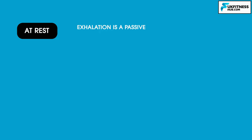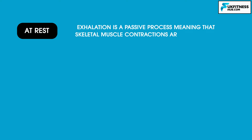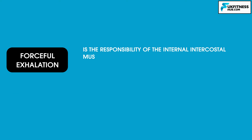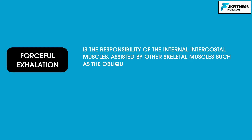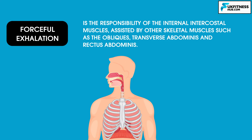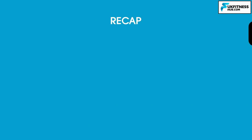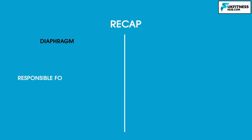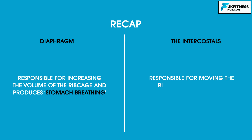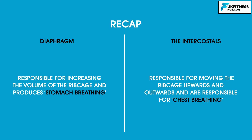At rest, exhalation is a passive process, meaning that skeletal muscle contractions are not required. Exhalation only becomes an active process when breathing becomes forceful, such as running quickly or blowing up a balloon. Forceful exhalation is the responsibility of the internal intercostal muscles, assisted by other skeletal muscles such as the obliques, transverse abdominis, and rectus abdominis. They act to force the ribs down and, in conjunction with the diaphragm relaxing and moving upwards, the space in the lungs decreases, forcing air out. To recap: the diaphragm produces stomach breathing, while the intercostals are responsible for moving the ribcage upwards and outwards for chest breathing.